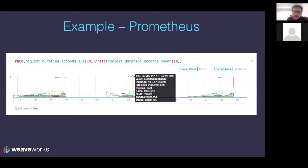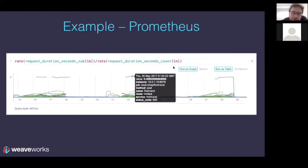Here's an example we'll also see in the demo: the average request duration for all components in an application. The PromQL query is the rate of change of the sum of request duration divided by the rate of change of the count — because average is sum divided by count. That's how you look at the average request latency for a histogram in Prometheus.